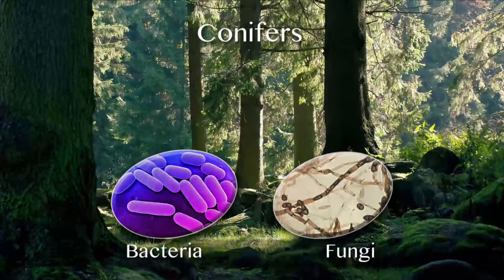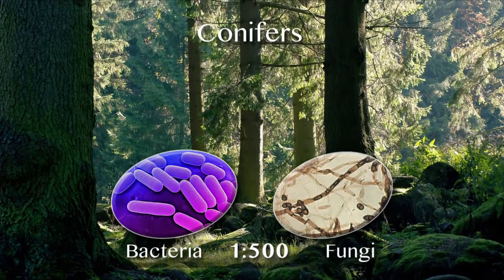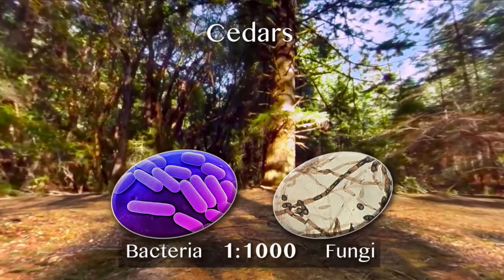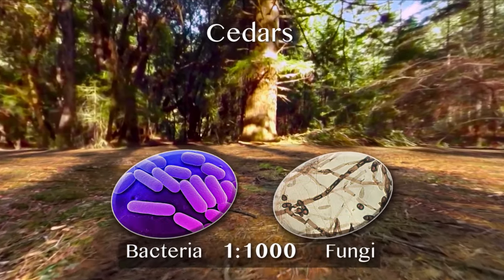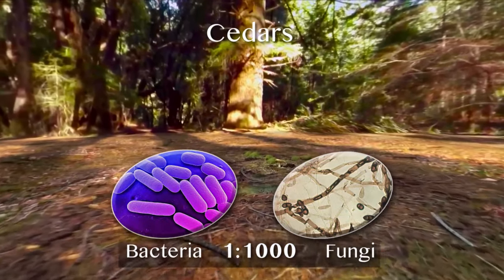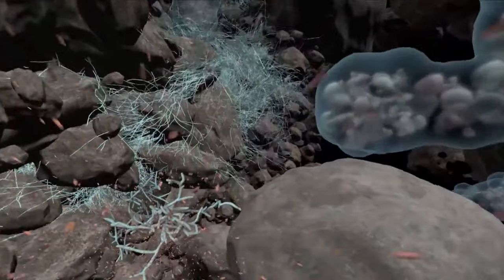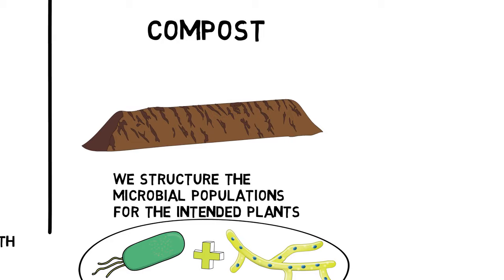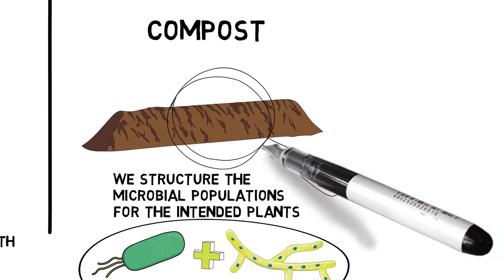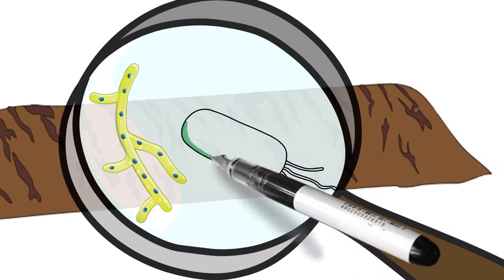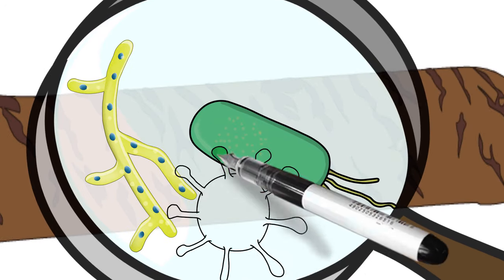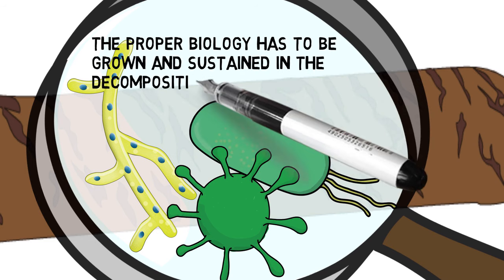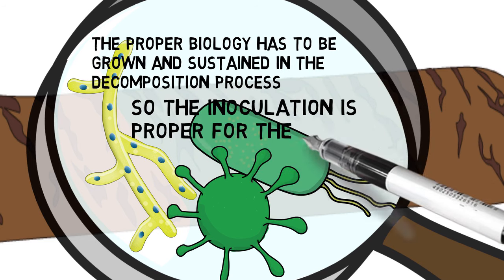In conifers, for every one bacteria, they require as much as 500 fungi. In old growth forest, for each bacterium there can be as high as 1,000 fungi. None of the beneficial soil biology balances required for these various plants are present in any raw manure form. They have to come through composted materials — whether organic matter or manure — and the proper biology has to be grown and sustained in that decomposition process so the inoculation is appropriate for the plant.